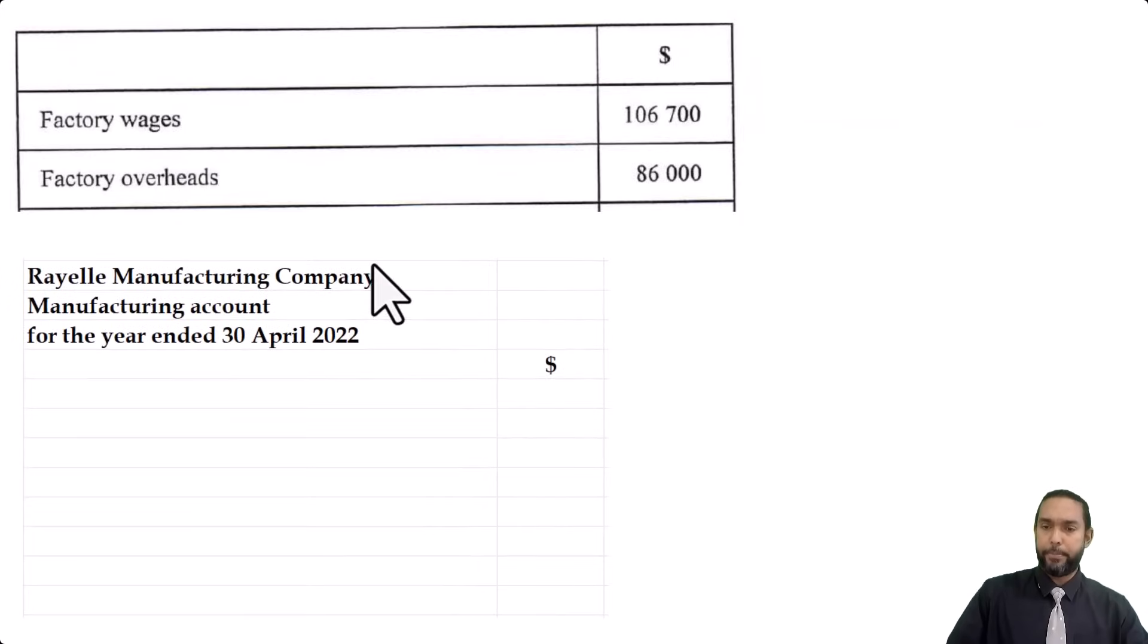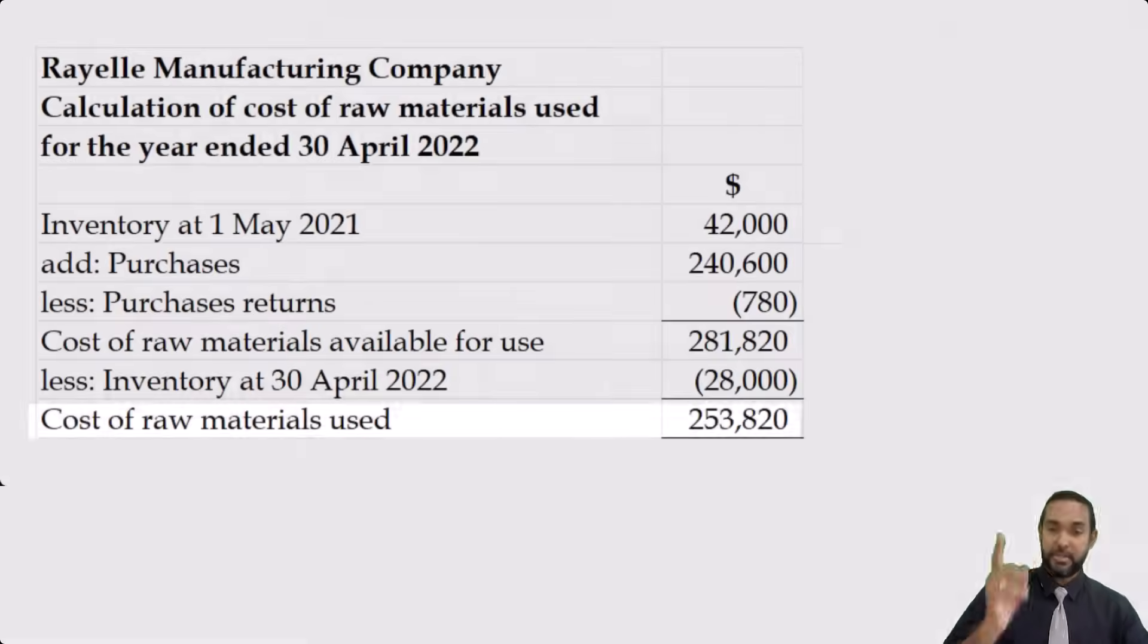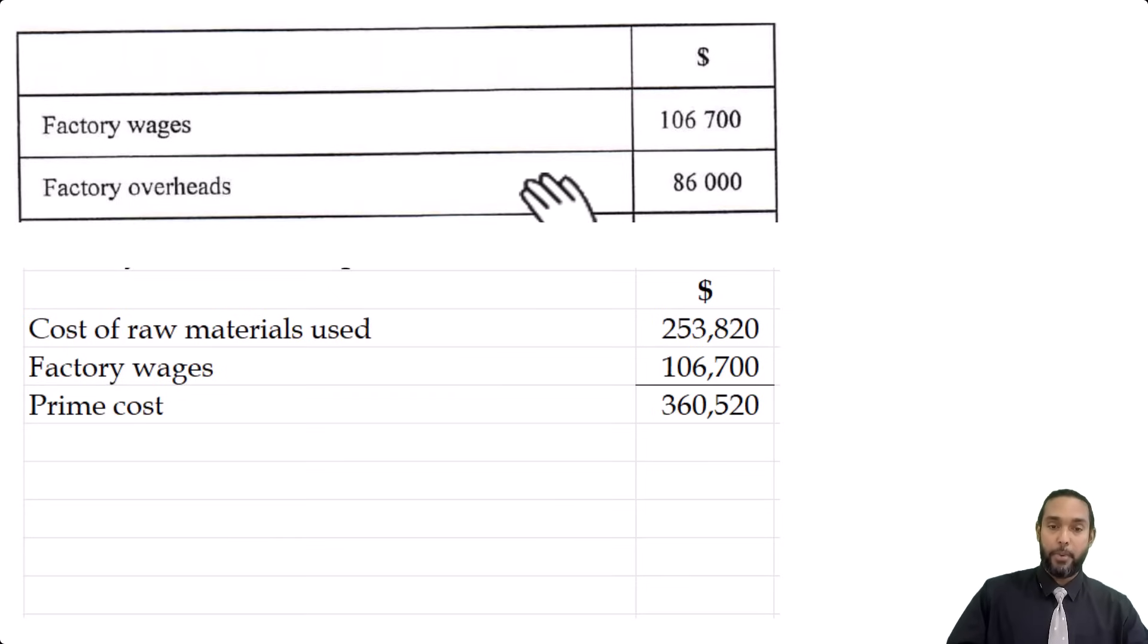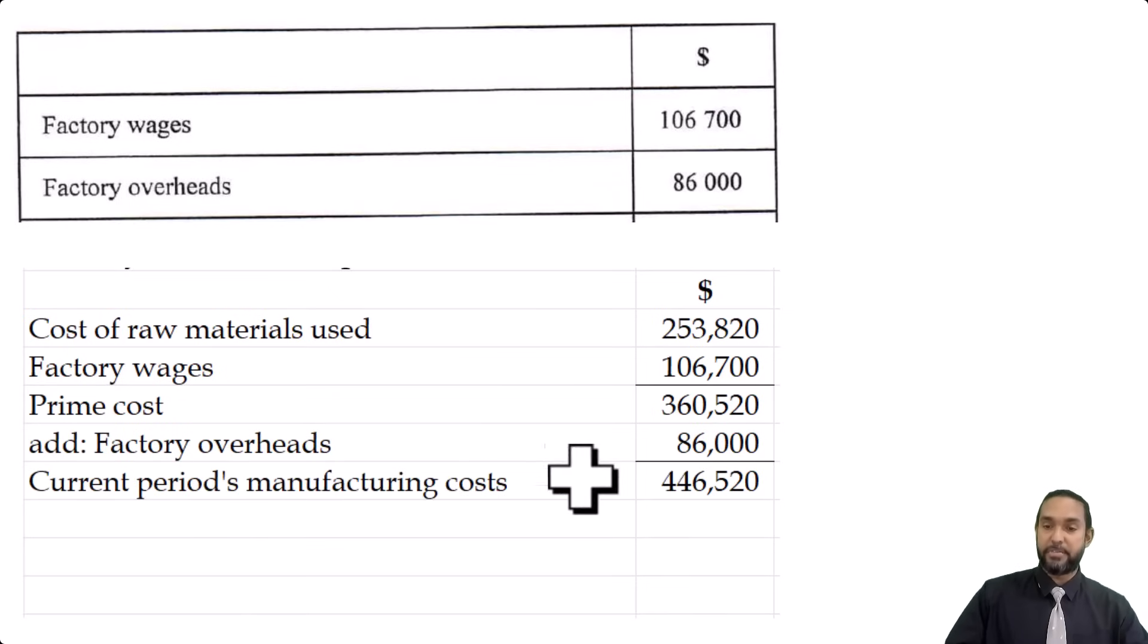So, head up properly your statement. Rael Manufacturing Company, manufacturing account for the year ended 30th April 2022. So, we start with the prime cost. We're going to start with that same cost of raw materials used of 253,820. Now, the table tells us factory wages 106,700. Unless otherwise stated factory wages can be safely assumed to be direct labor. We're going to add those two together to get prime cost of 365,200 to which we're going to add our overheads of 86,000. And that's going to give us the current period's manufacturing costs.